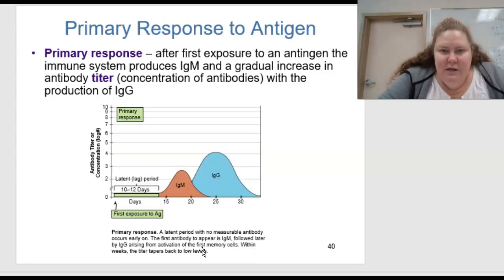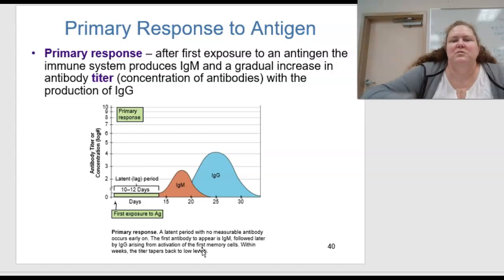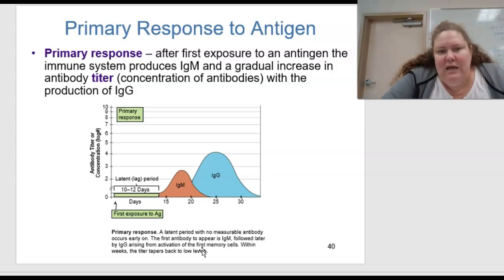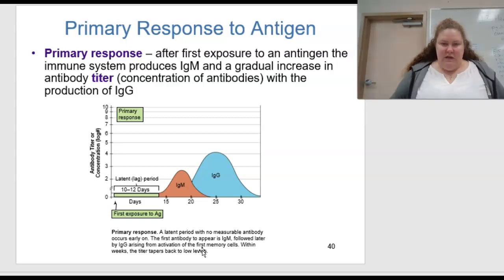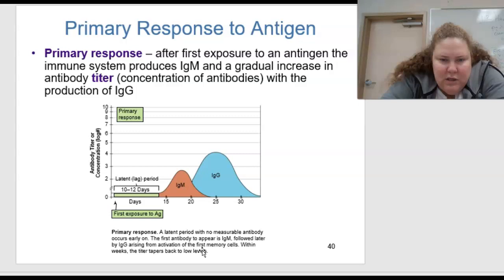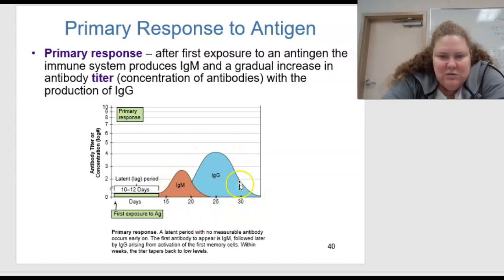What about the primary response to an antigen? The primary response is after the first exposure to an antigen — the immune system produces IgM and gradual increases in the antibody titer. The titer is a fancy word for concentration of the antibodies, and this includes the production of IgG. In figure 15.17, we have a first exposure, a latent period with no measurable antibody early on, then the first antibody appears as IgM, followed later by IgG arising from activation of the first memory cells. Within weeks, the titer tapers back to low levels.